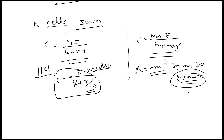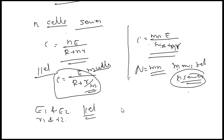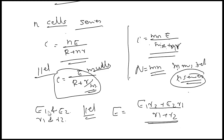If we have two cells of different EMFs E1 and E2 with internal resistances r1 and r2 connected in parallel, the net EMF = (E1r2 + E2r1)/(r1 + r2), and the combined internal resistance follows 1/Rp = 1/r1 + 1/r2.